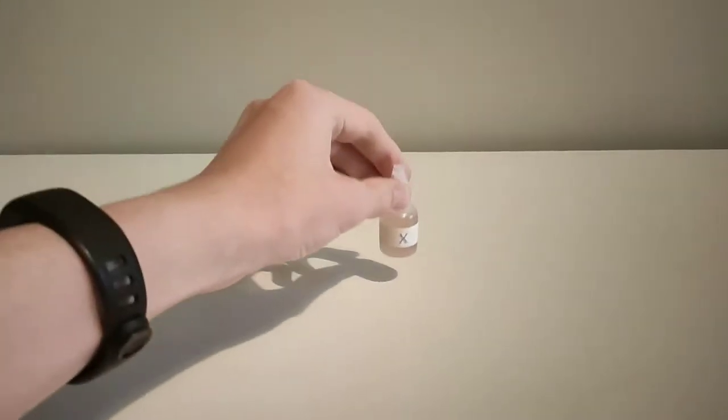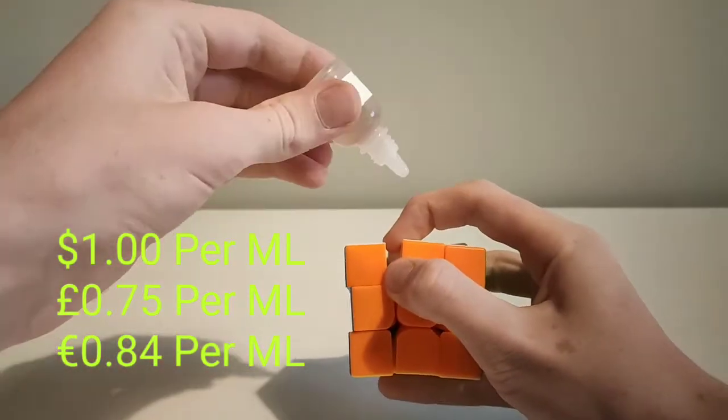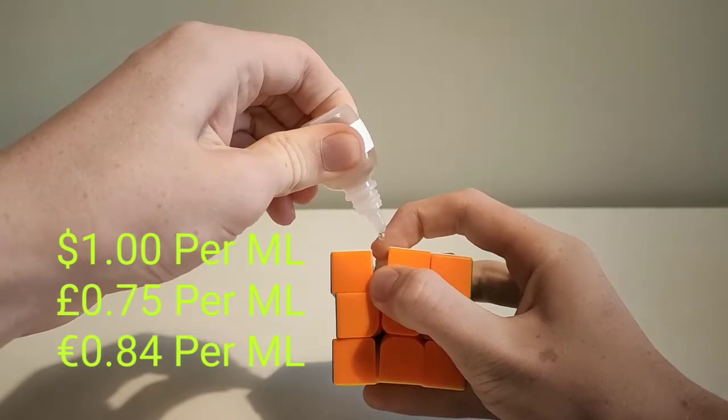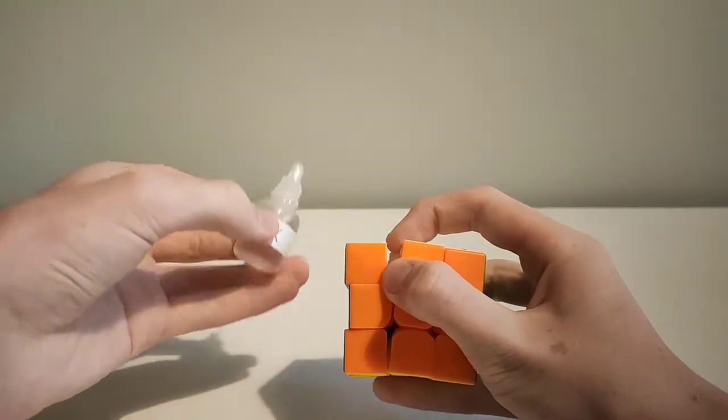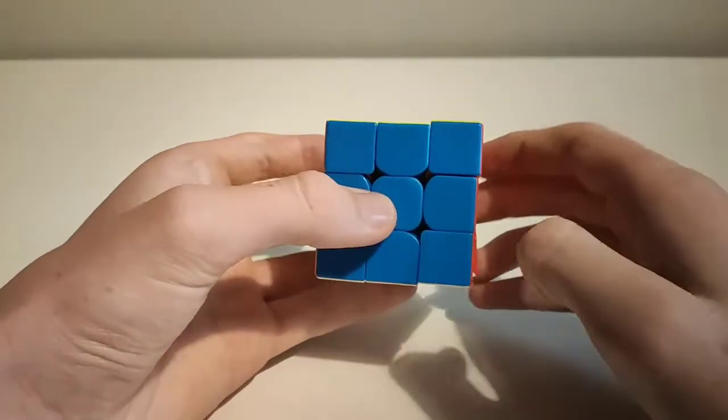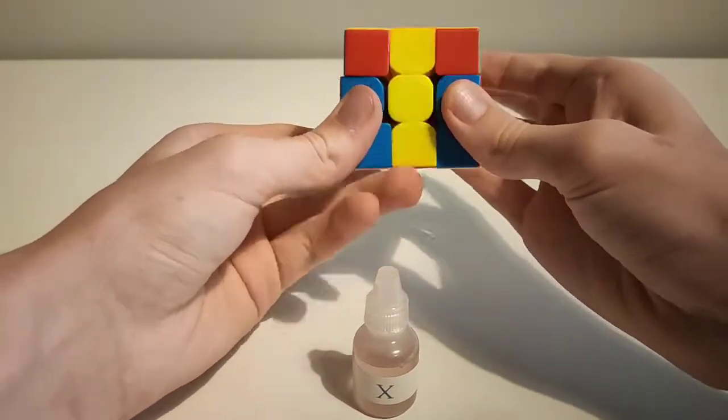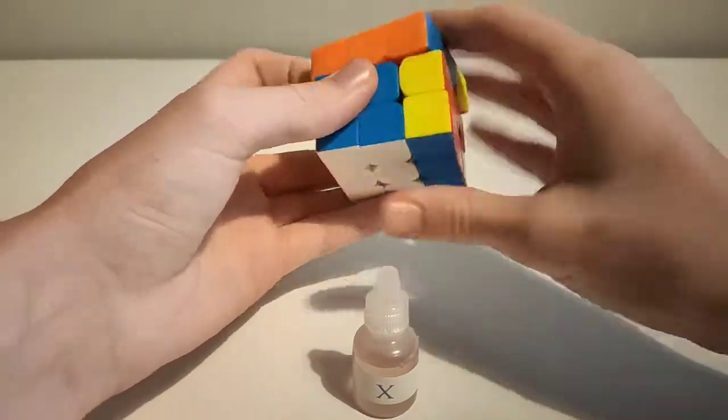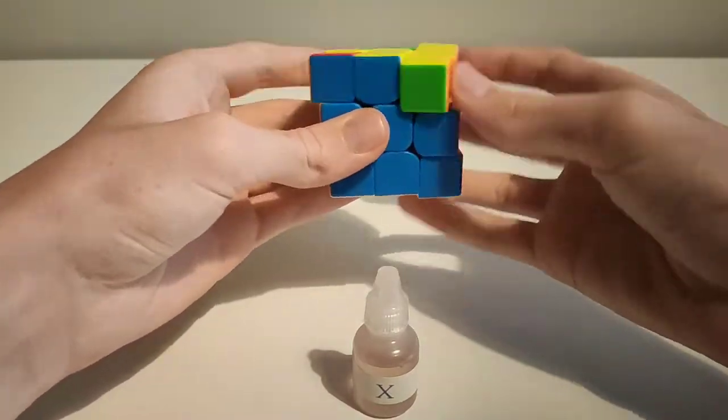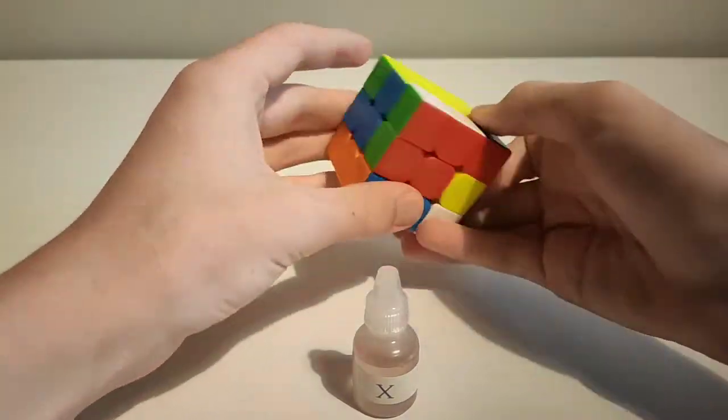Next we have angstrom compound X. Angstrom compound X makes the cube slightly slower and a lot smoother. The turns feel a lot more connected as they flow better. If you put a lot in, the cube can slow down quite a bit, but you do not need a lot to get the smoothing effect.